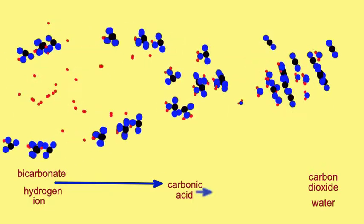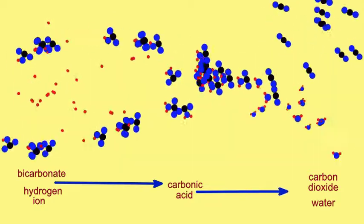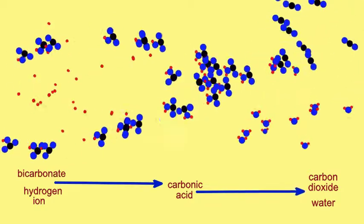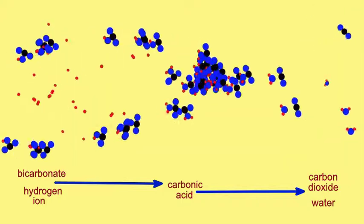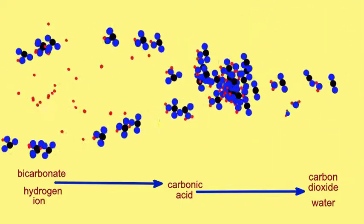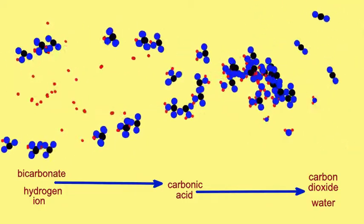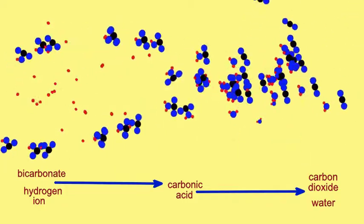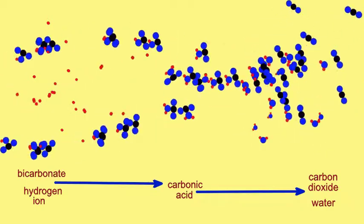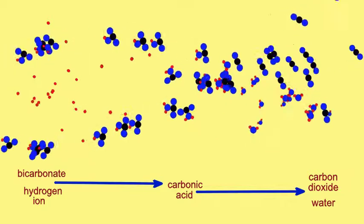The carbonic acid which is formed can dissociate to form carbon dioxide and water. This occurs in the lungs so that the carbon dioxide can be exhaled, thus removing the excess acid and maintaining the body's pH.